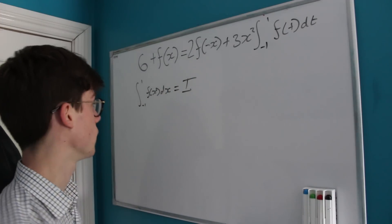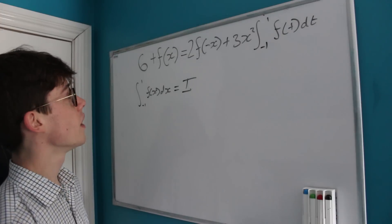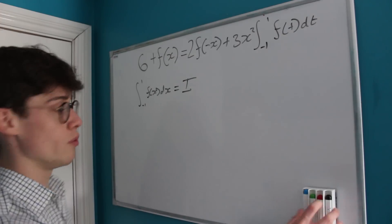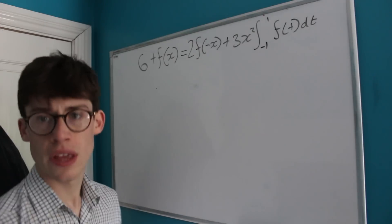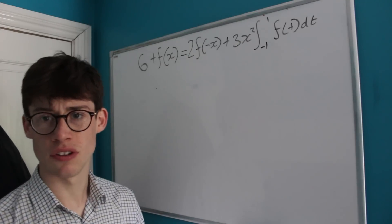It's going to be a constant, of course, because it's a definite integral. Bearing in mind that we've called that I, the first thing I'm going to do is swap this integral from -1 to 1 of f(t)dt with an I, because our variable of integration doesn't really affect anything.